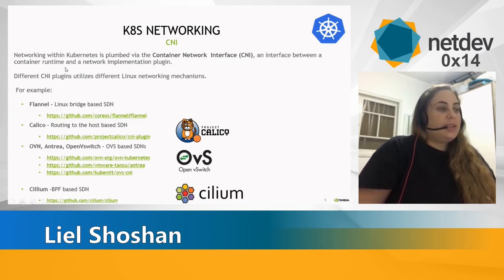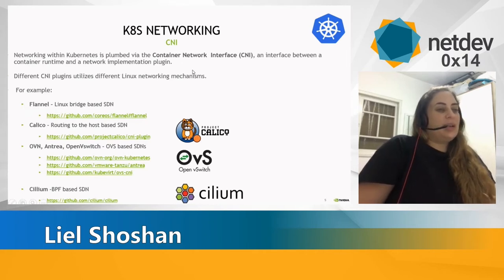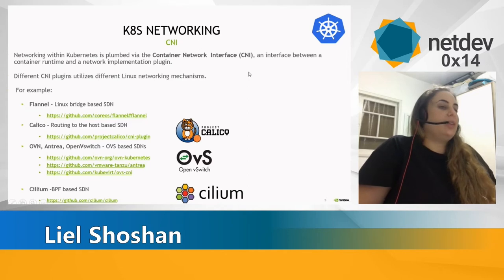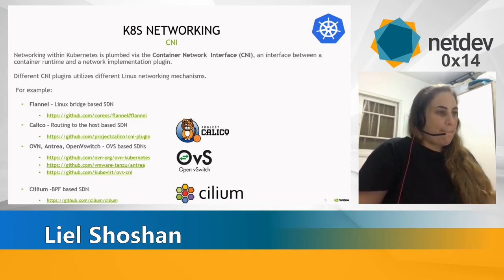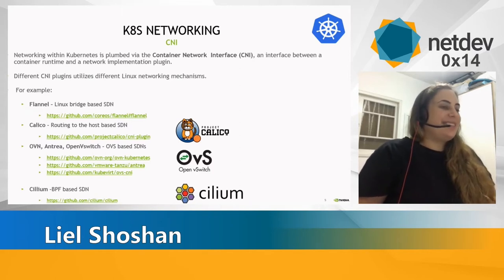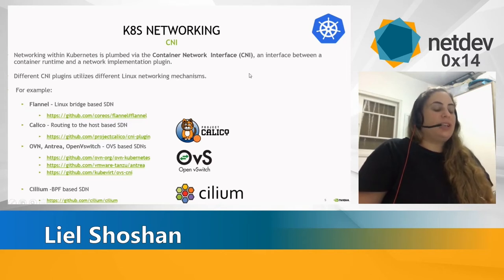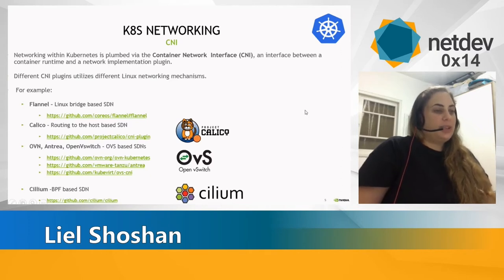The Kubernetes networking model is based on CNI, container network interface. It is built on top of the container network interface, CNI, which is an interface between the container runtime and the network implementation plugin.